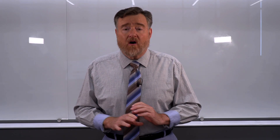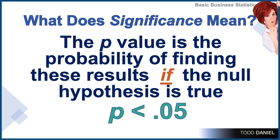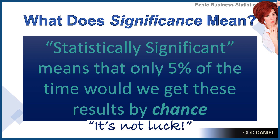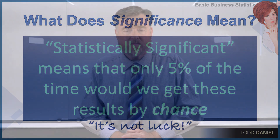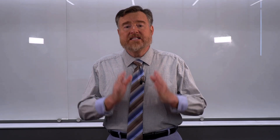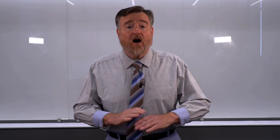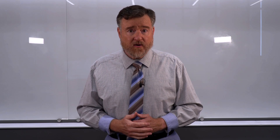Really, all that we are learning is that this p-value is the probability of finding these results if the null hypothesis is true, which we know that it is not. Statistically significant simply means that only 5% of the time would we have found the outcome that we did find purely by chance. Therefore, differences that we have found are unlikely to have occurred by chance.